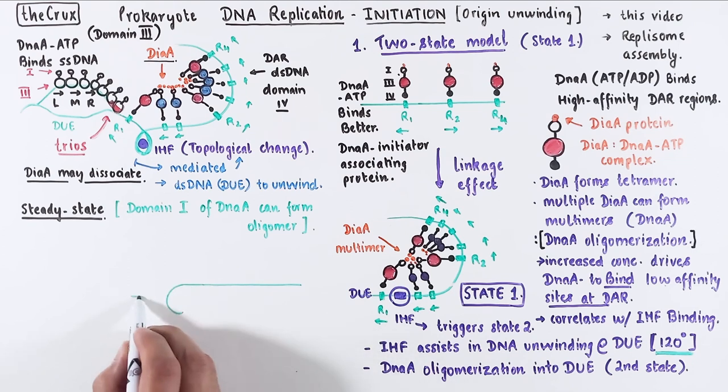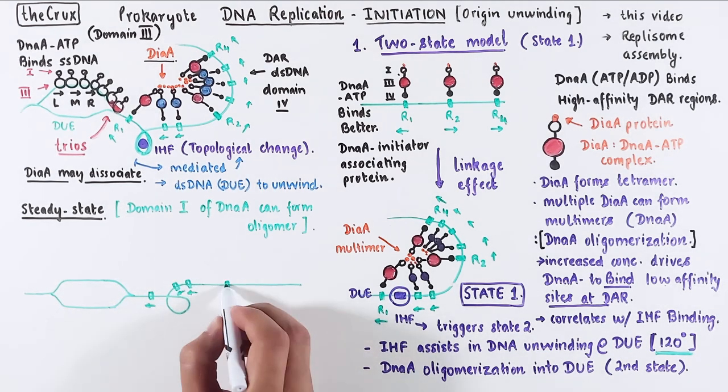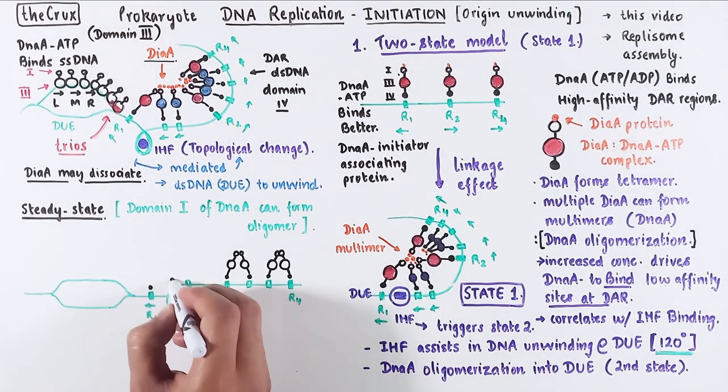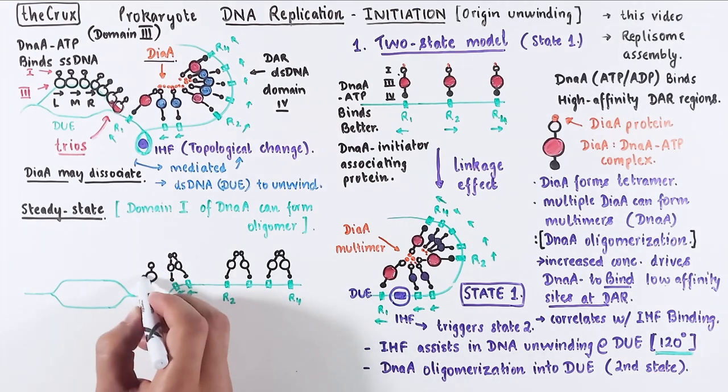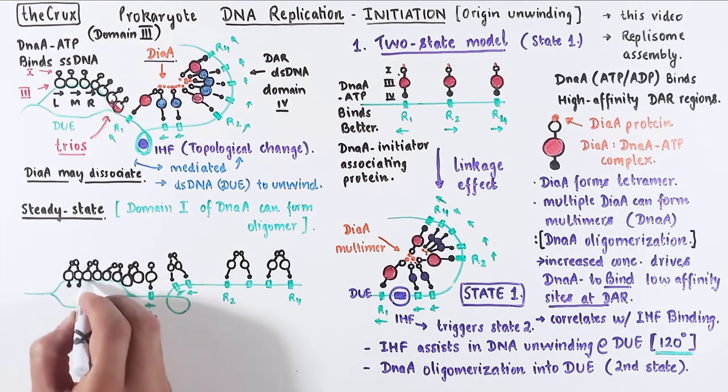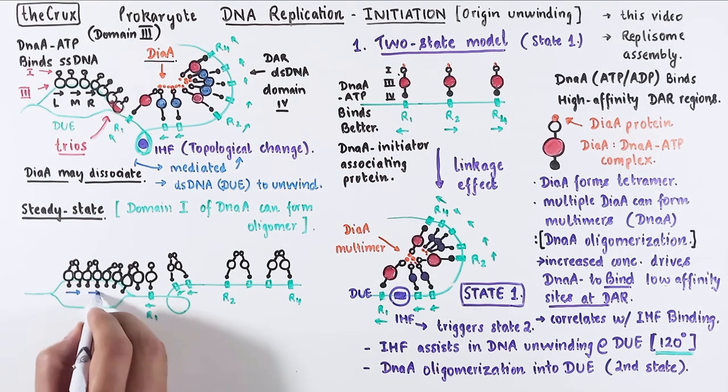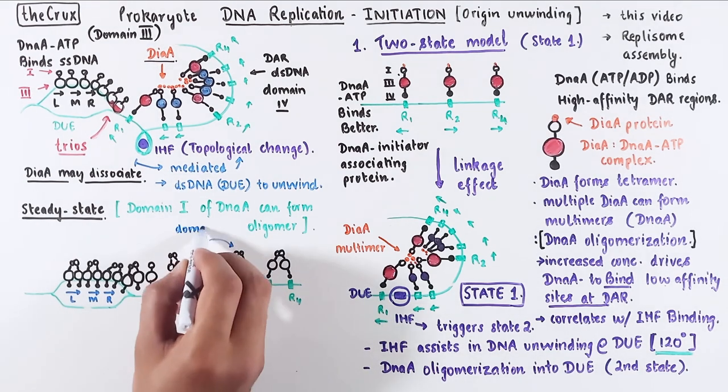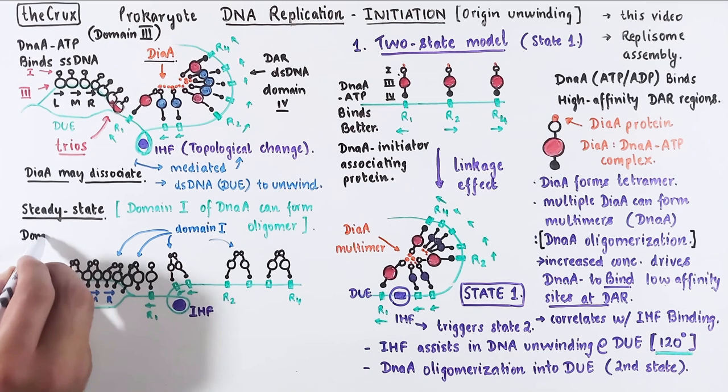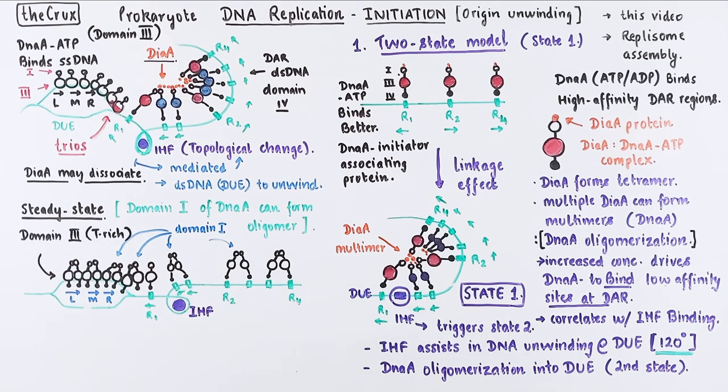To understand what is happening in this, you have to note that the domain 1 of DnaA can form an oligomer with another DnaA domain 1. So essentially, DnaA can dimerize. So once the DiaA is gone, the domain 1 of these DnaA proteins can interact with each other. This is a highly dynamic state, and this is possible because of the flexible linker domain 2. One last thing. The domain 3 interacts with the LMR motif, especially on the T-rich part.